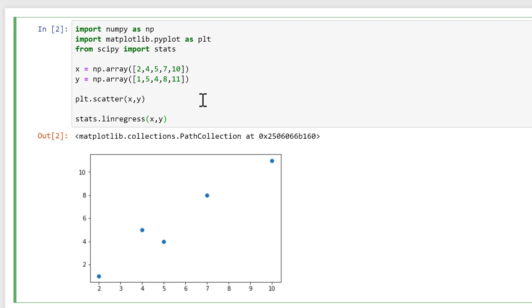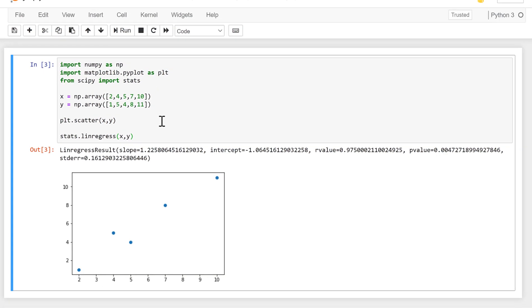linregress gets us five results: that's the slope of the trend line, the intercept of the trend line, the r value, the p value, and the standard error.